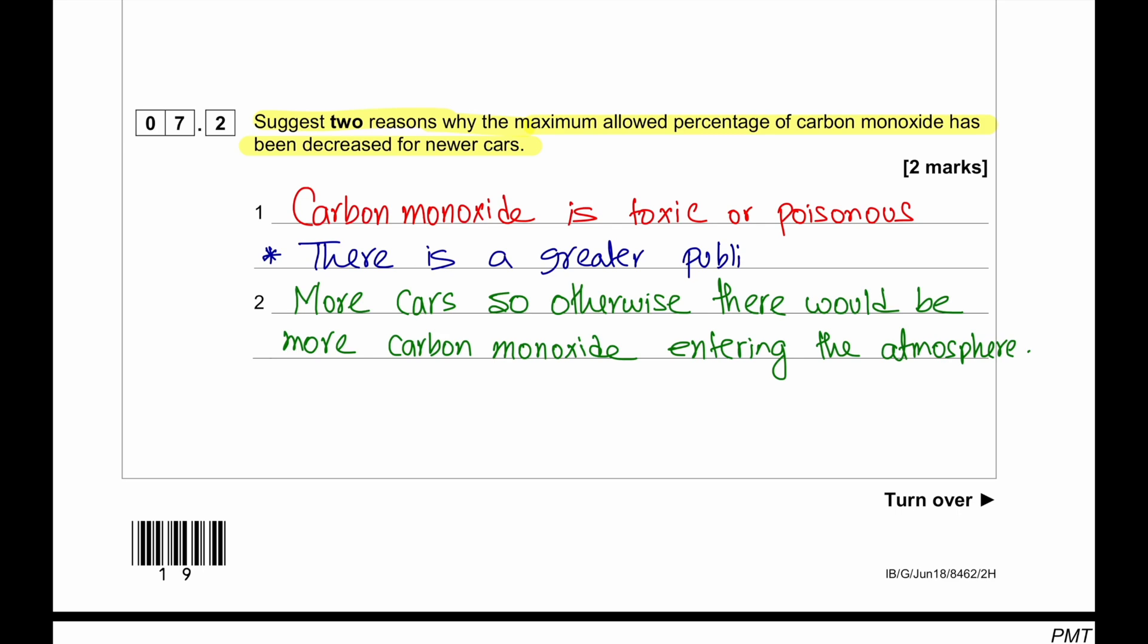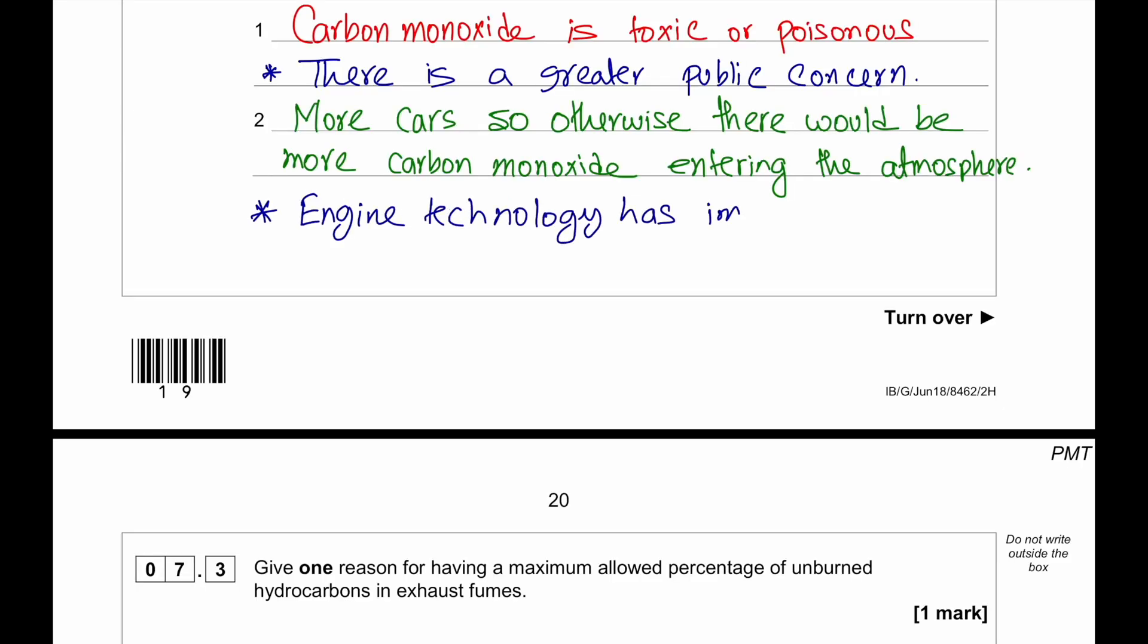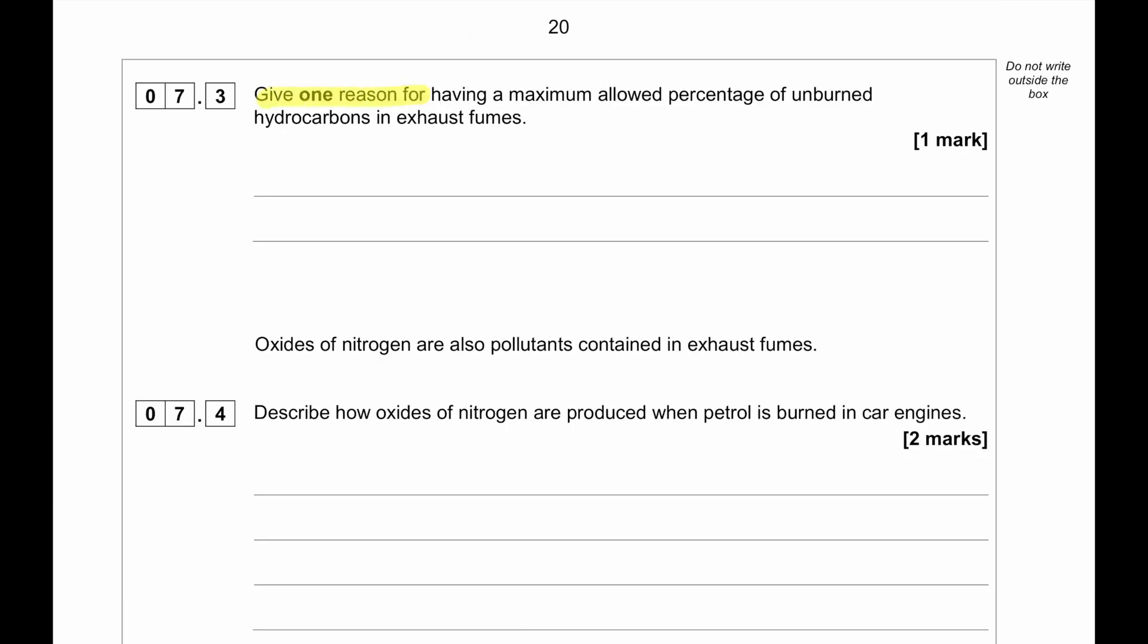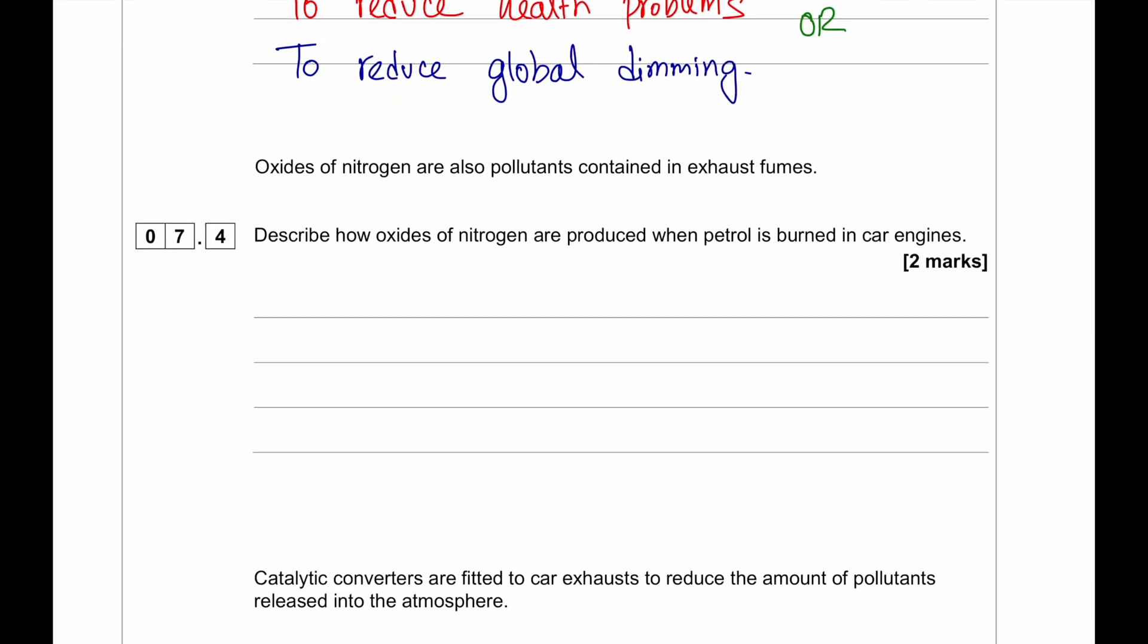These are additional points I'm writing. You may write them as well if you don't remember the primary two points. Give one reason for having a maximum allowed percentage of unburned hydrocarbons in exhaust fumes. Unburned hydrocarbons causes health problems and unburned hydrocarbons produces carbon which can lead to global dimming. So the main concern for this would be to reduce health problems or to reduce global dimming.